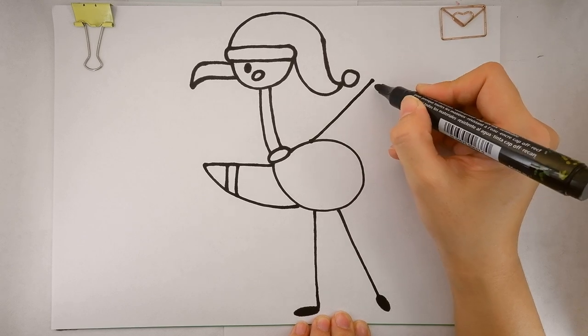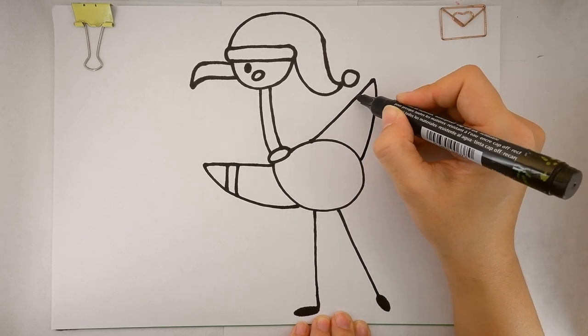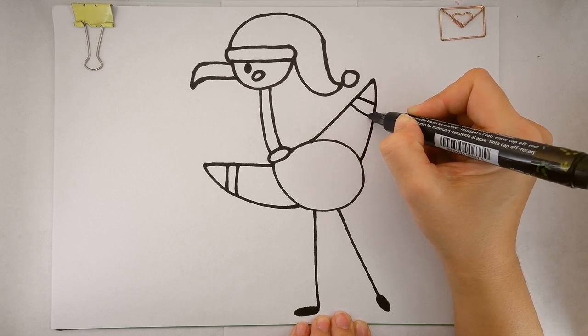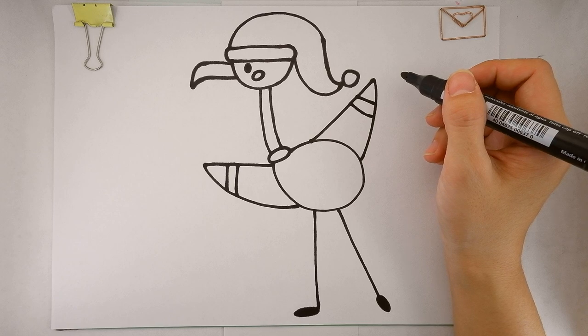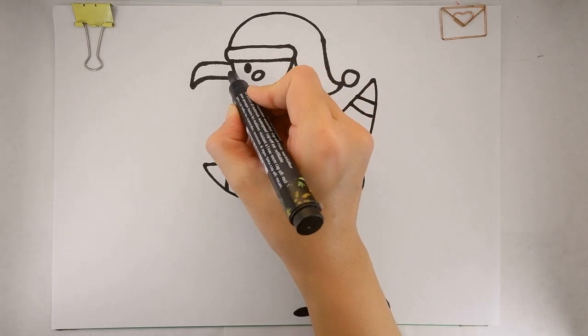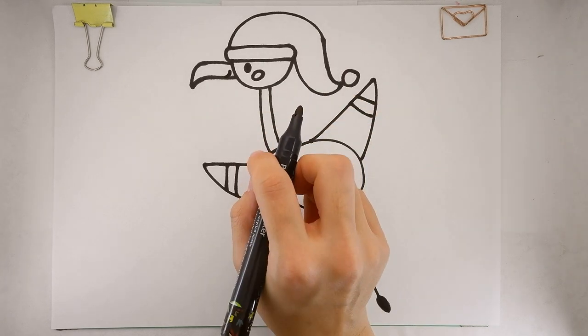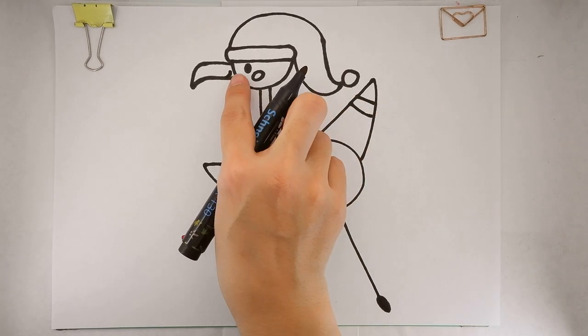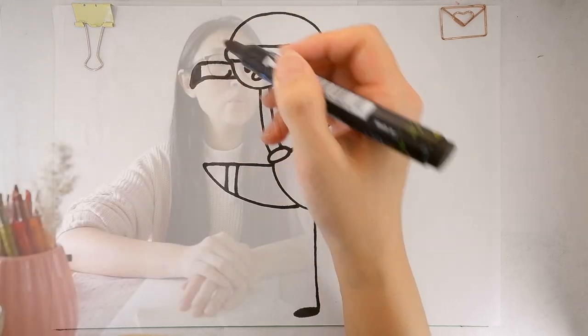Let's add a small curve for a smile inside the beak. Draw a vertical line inside the beak and color it. Oh, we did it! Good job! I like your flamingo.